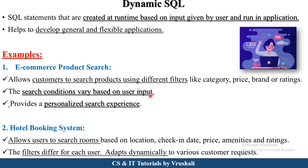Let's take another example: a hotel booking system. Suppose you want to book a particular room in a particular hotel. You can search a hotel booking application or their website and look for a room as per the location, your check-in date, price, different amenities, and rating. All this data is different for different customers — they filter the data as per the requirement of the customer. This is called dynamic SQL.